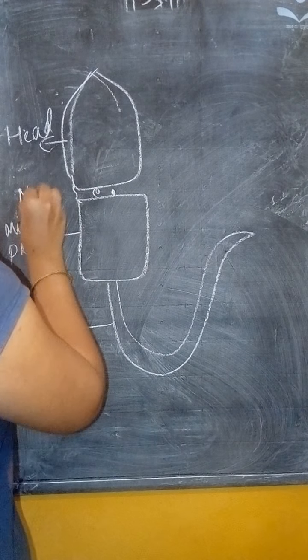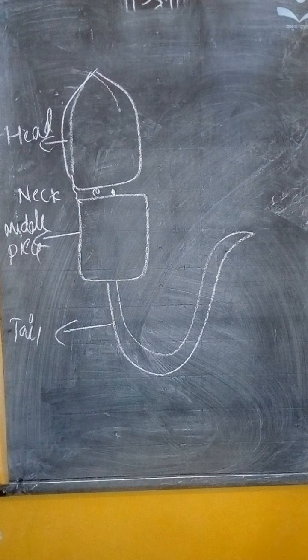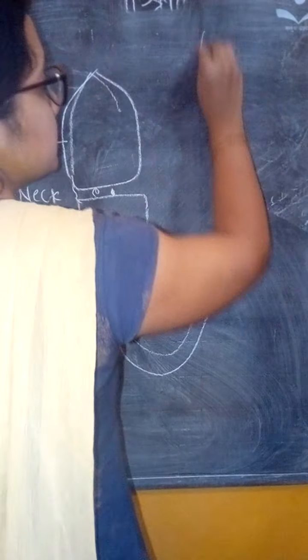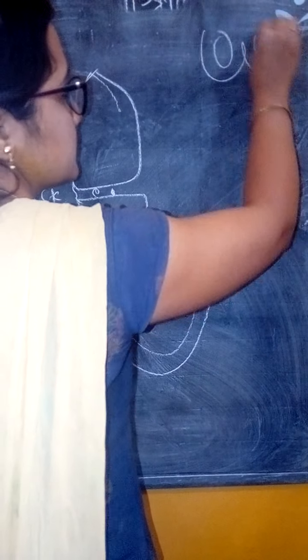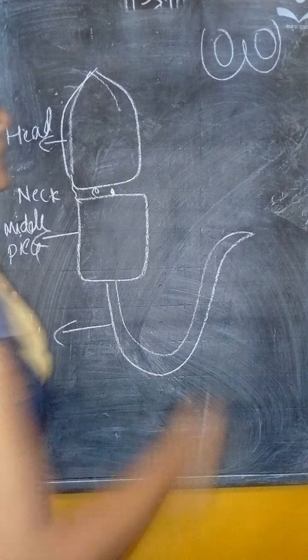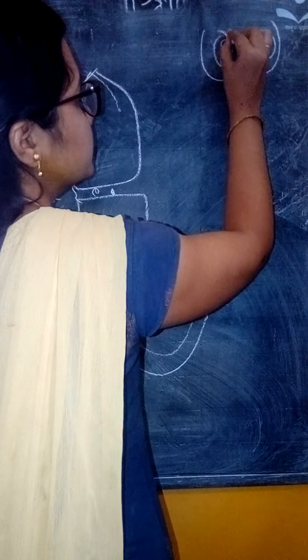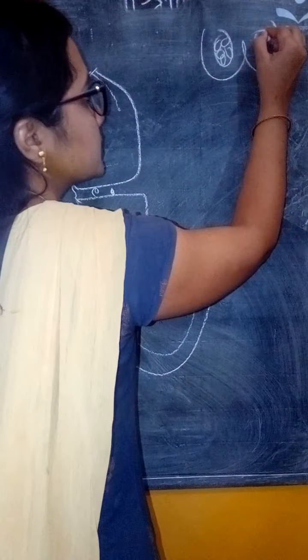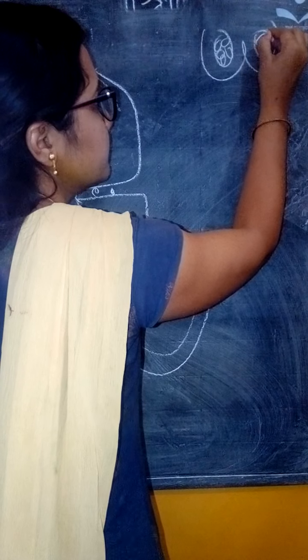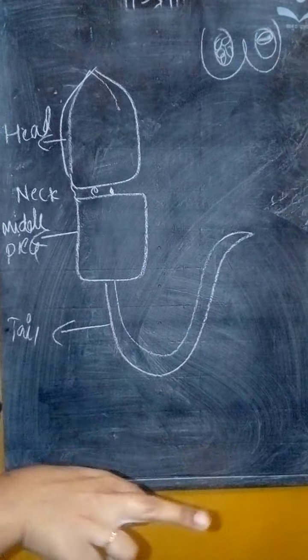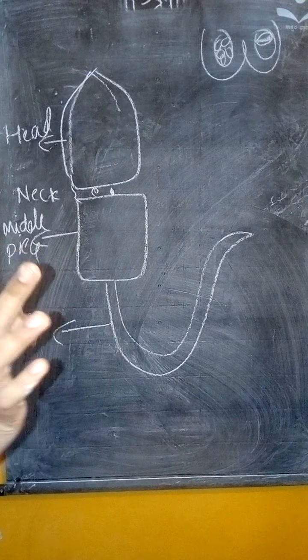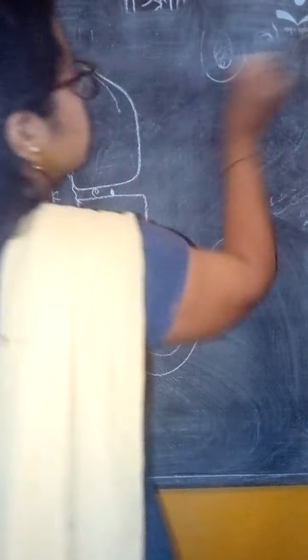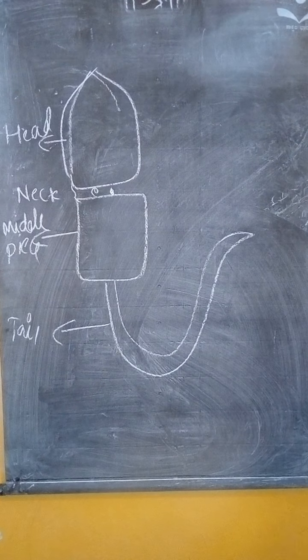Before going to that, the sperm is located in the scrotum where the testis is present. The testis gives rise to testicular lobules. Each testicular lobule contains seminiferous tubules, where sperm are formed. Now we will see the structure one by one.